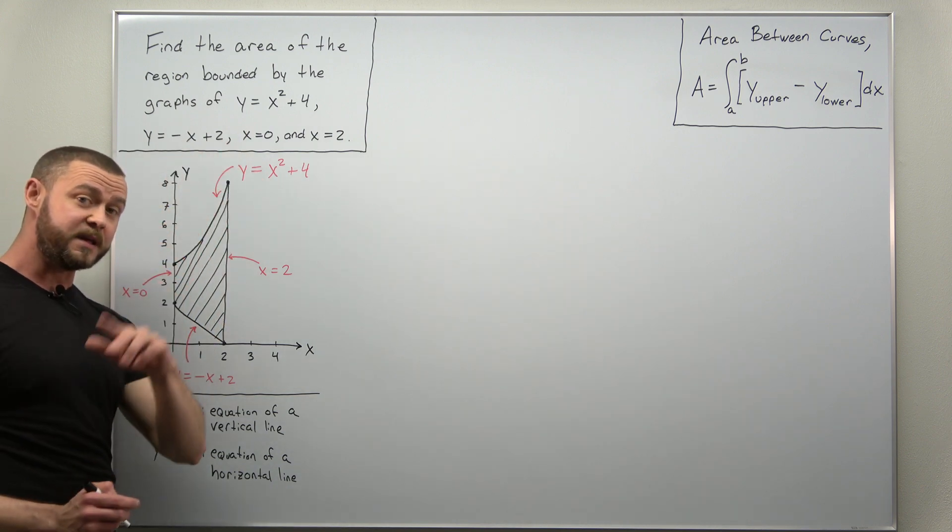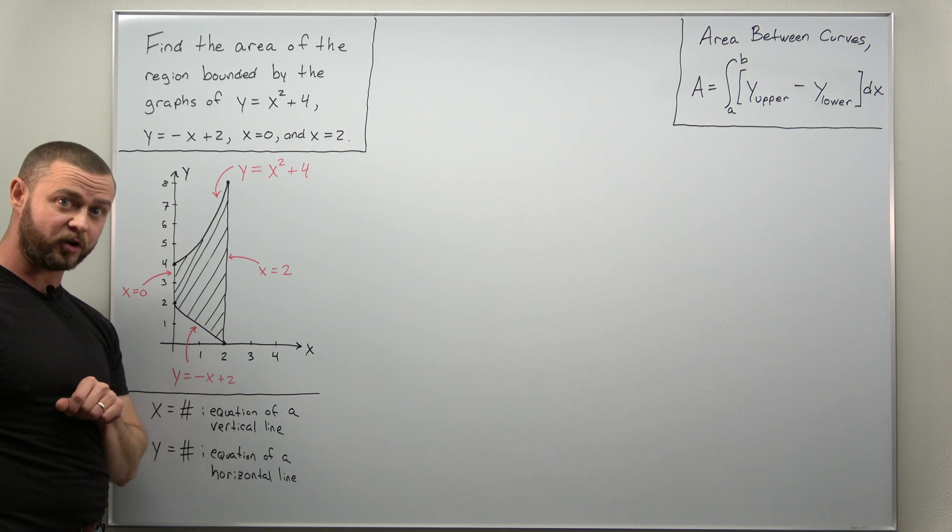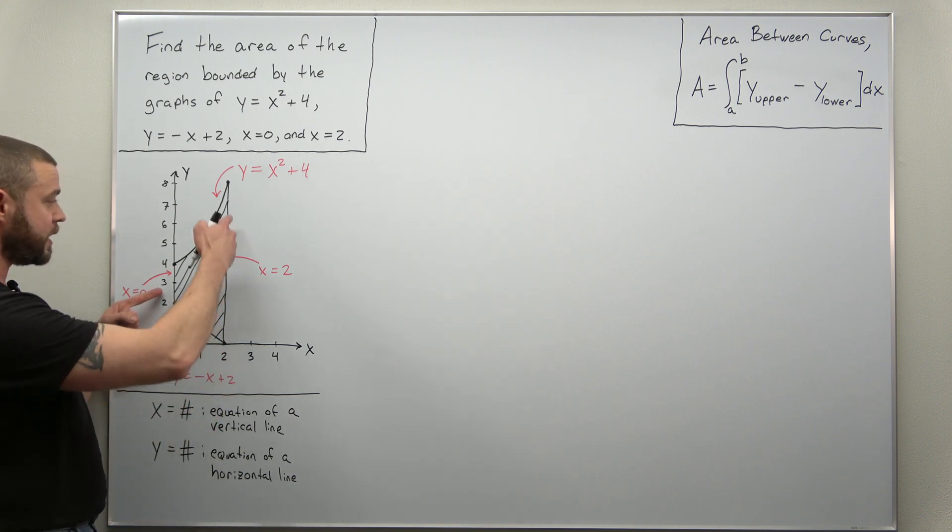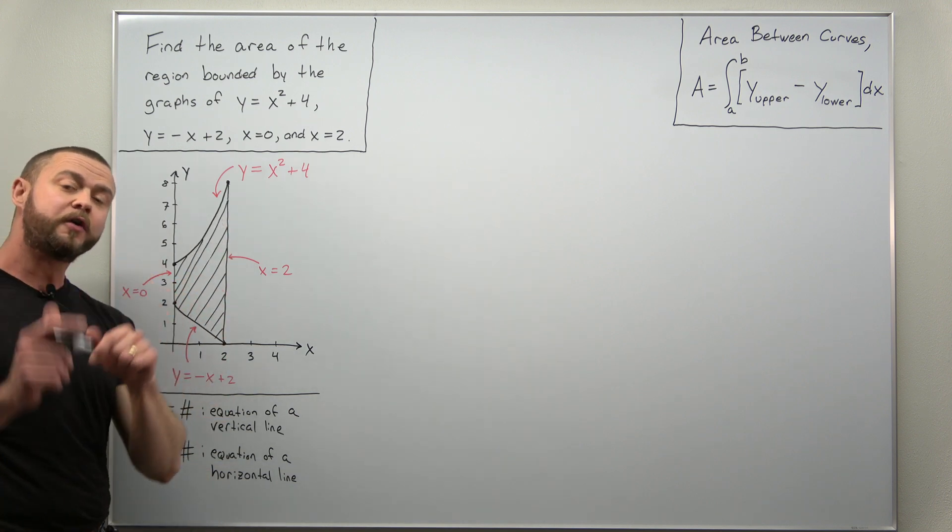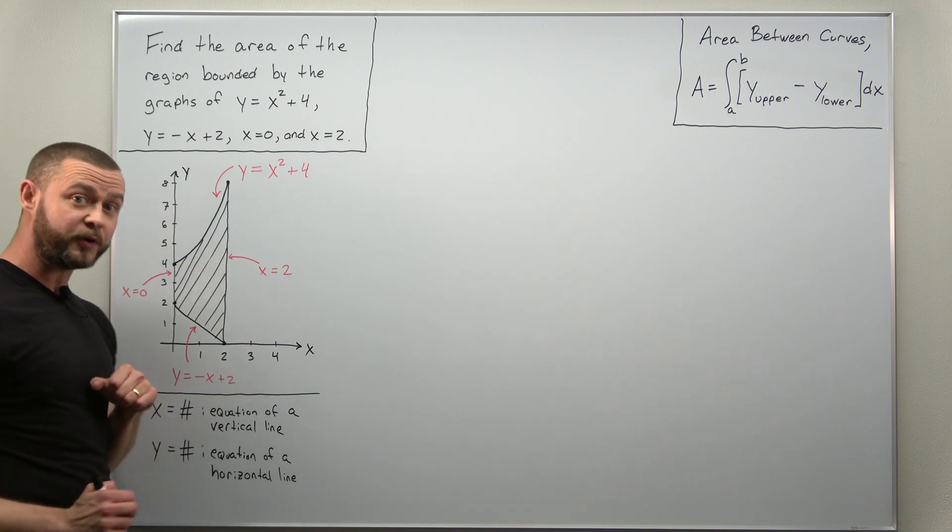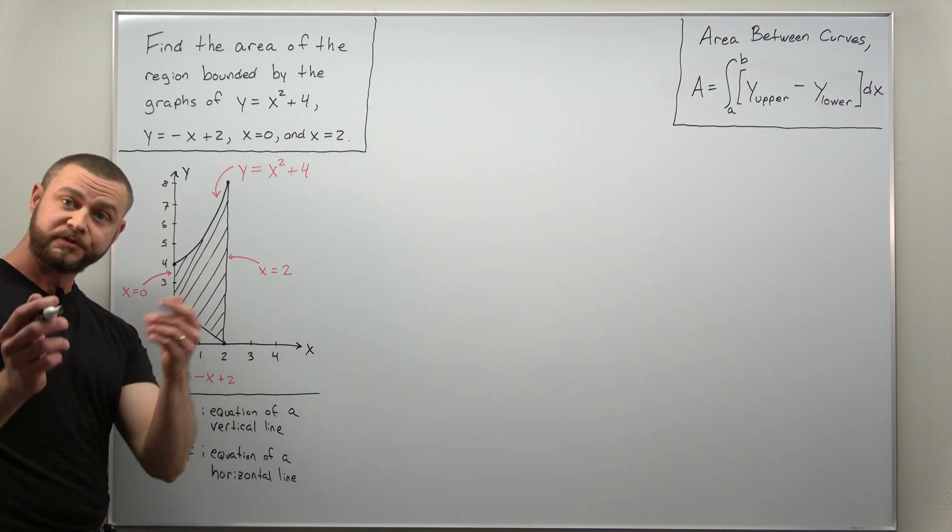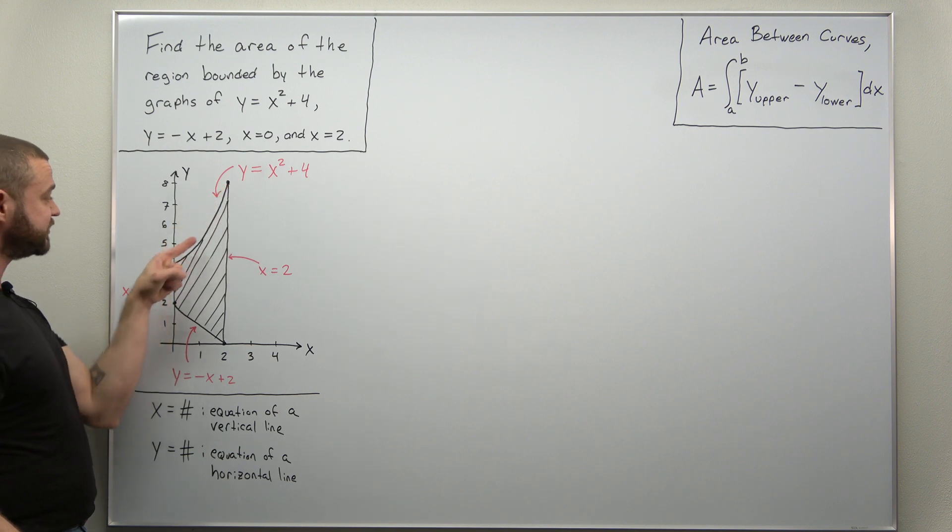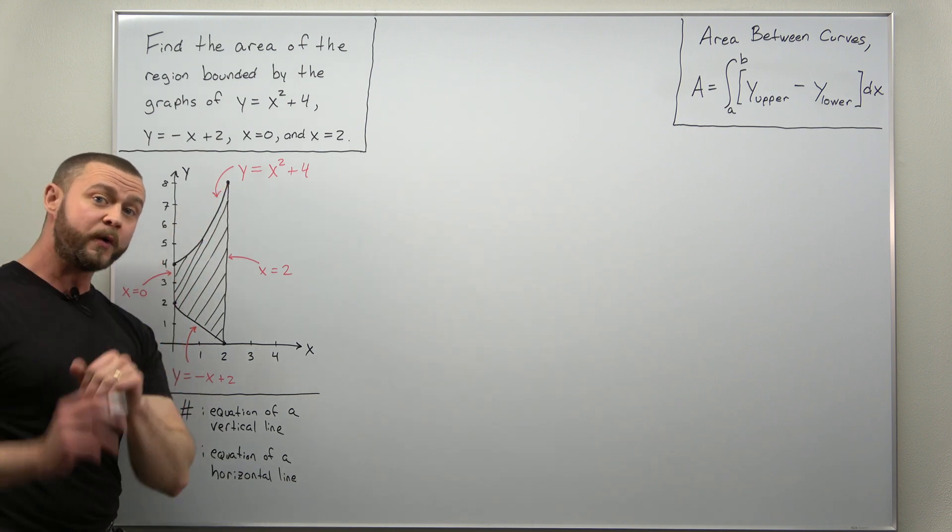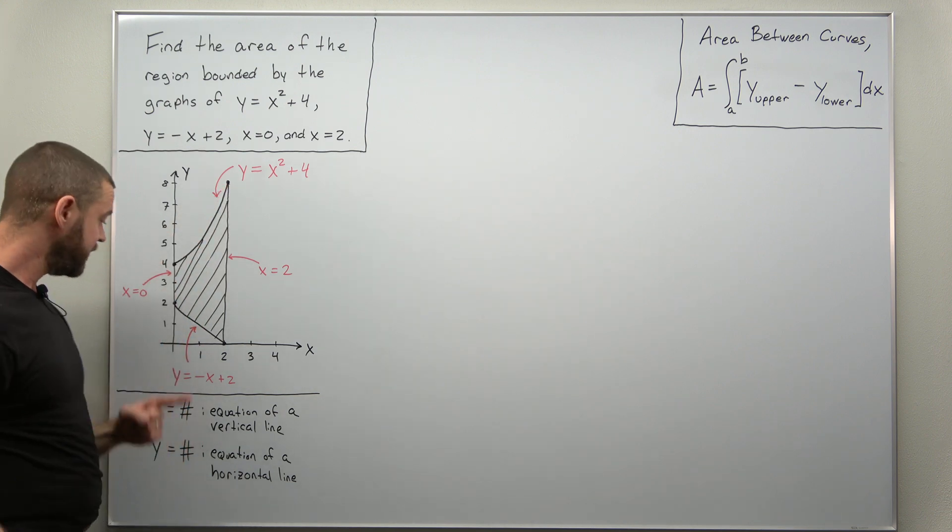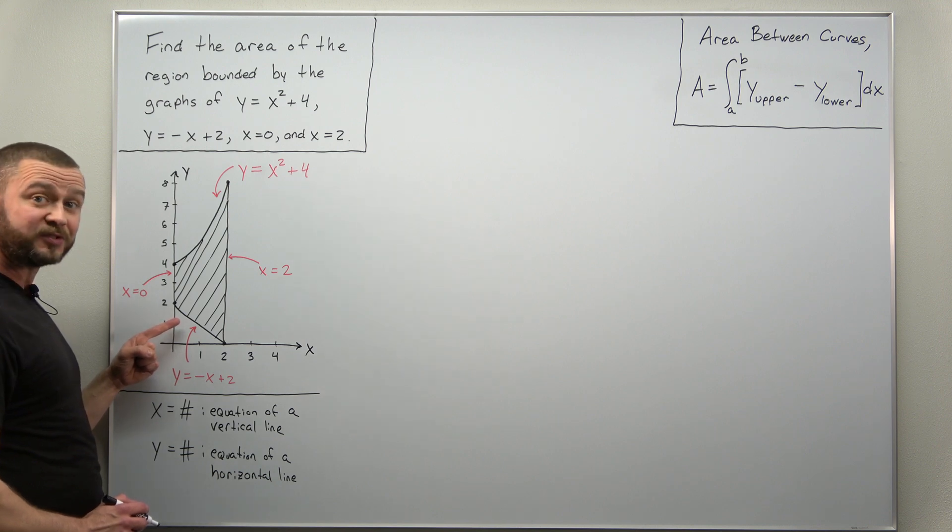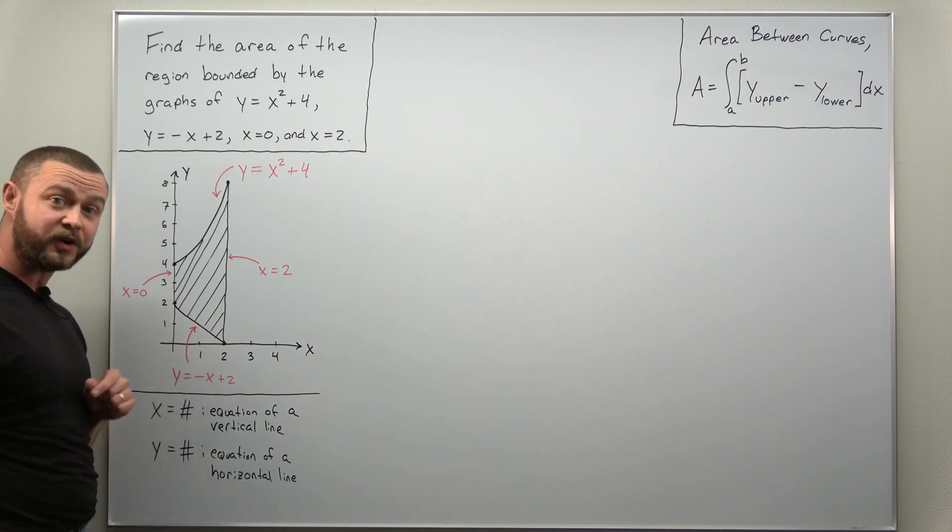Two of them are going to be the upper and lower functions that we're looking for. x equals 0 and x equals 2, those are the vertical lines that bound the region on the side. So from our sketch we can clearly see the graph of x squared plus 4 is always on top of that region and the graph of y equals negative x plus 2 is always on the bottom.